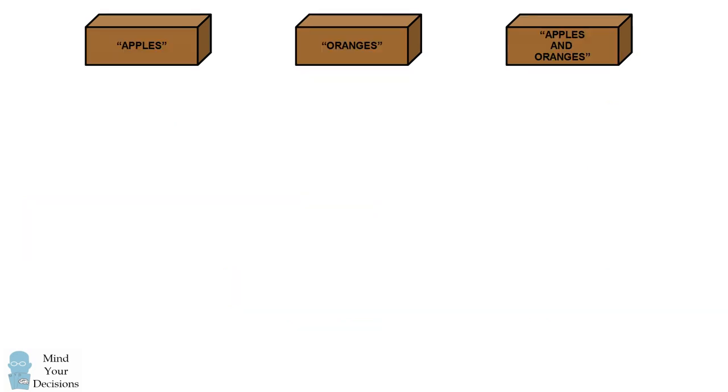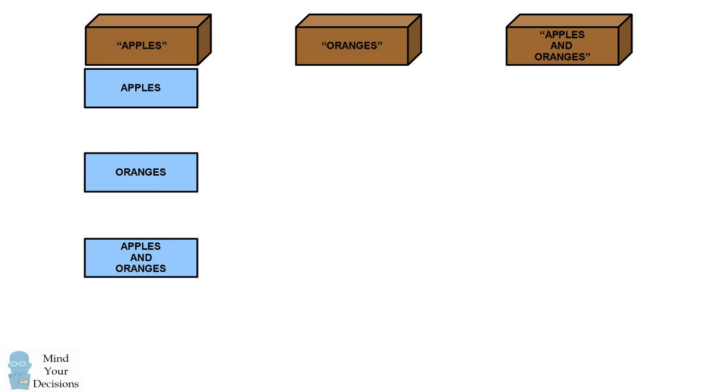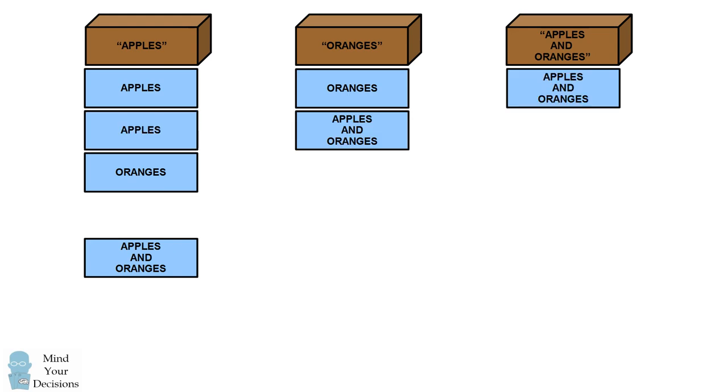So there's another way to understand the solution. It's to consider the different ways to label the three boxes. Notice the first box can have one of three labels. For each of those labels, there are two possible labels that are remaining for the second box. The final box must have the last label that you didn't use.